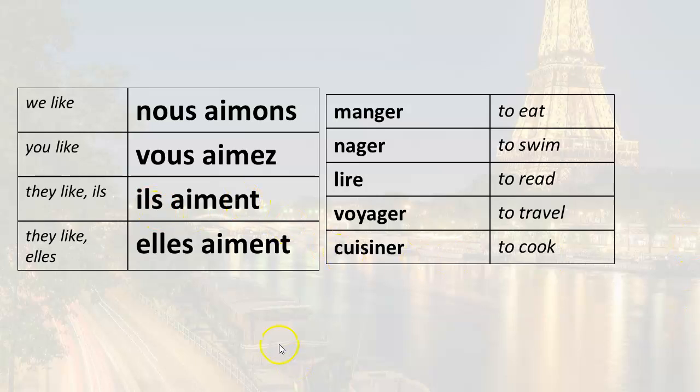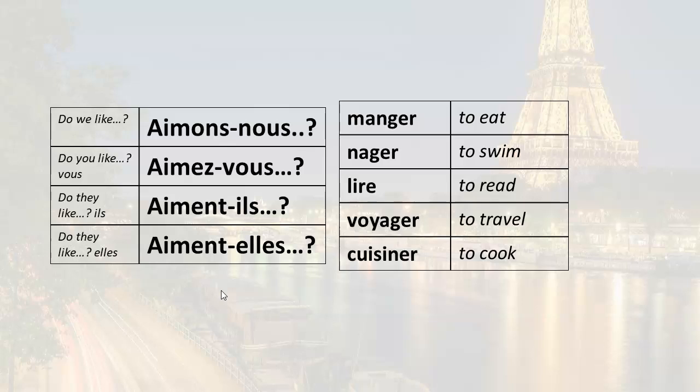And now what we're going to do is we're going to add questions. So remember, one way to make questions in French, yes or no questions from statements, is to reverse the word order. This isn't the only way. There are other ways. And I do have videos on those other ways. But this is just one way. So we're going to just practice with a few forms. So aimons-nous is do we like. Aimez-vous, do you like. Aiment-ils, do they like. Aiment-elles, do they like.